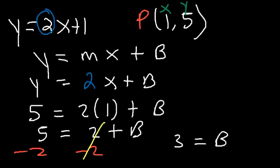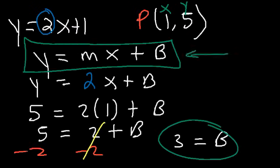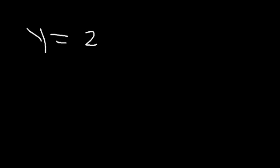Now, once you have the value of b, go back to the original equation in slope-intercept form and replace b and m, but leave x and y alone. So the equation we're looking for is y is equal to 2x plus 3. And that's the answer.